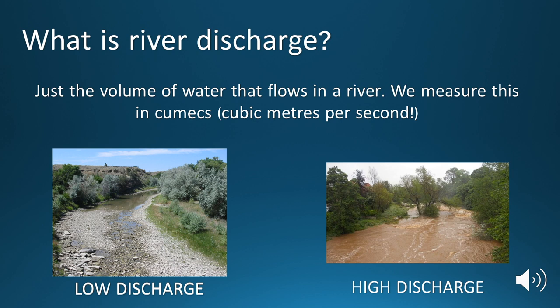Well, river discharge is essentially just the volume of water that flows in a river. We measure this in something called cumecs, which is the geographical word for cubic metres per second. We're basically measuring how many cubic metres of water is flowing past a given point per second. Obviously if you've got a lot of cubic metres of water that means there's a lot of water within the river channel.